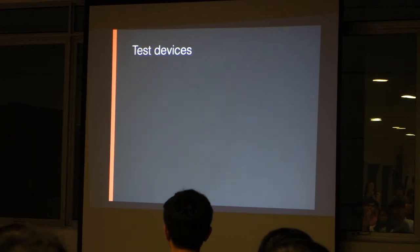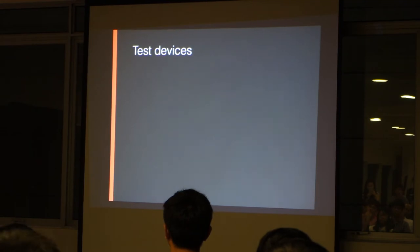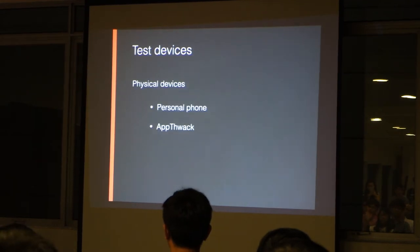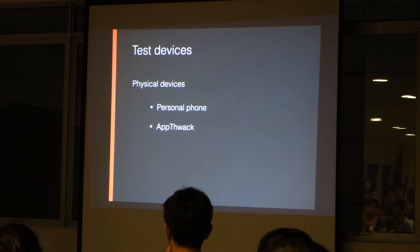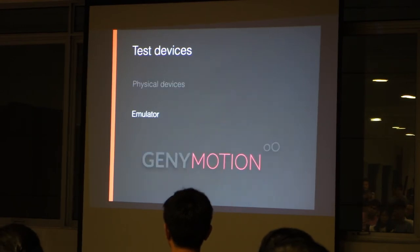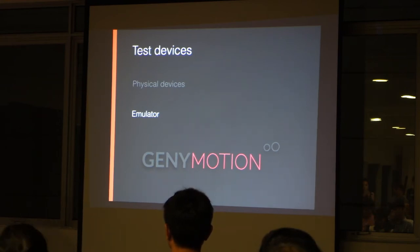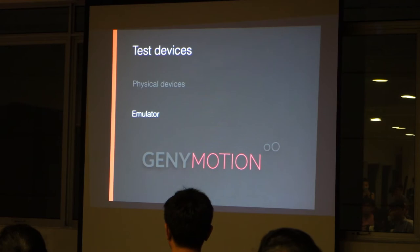Next are the test devices I use. For physical device I use my personal phone, and also an app type device that helped me in one instance which will be mentioned later. For emulator, I use GenyMotion. GenyMotion is fast and has different API levels to test against. You can also zoom on the screen to see pixel-perfect details for the app.